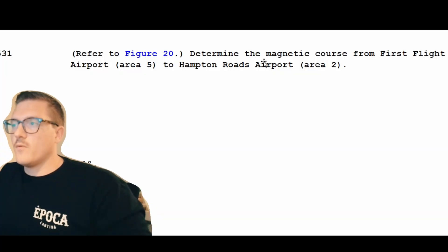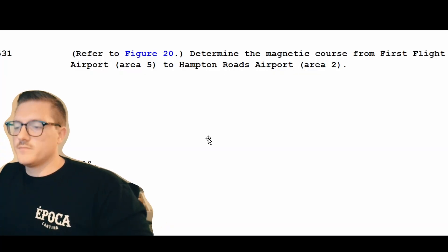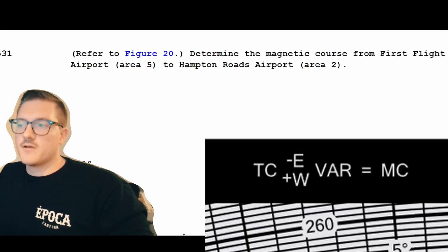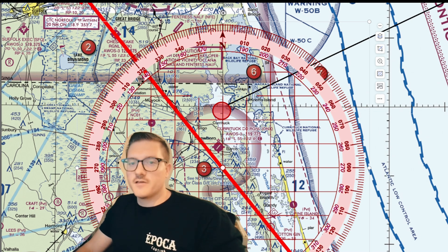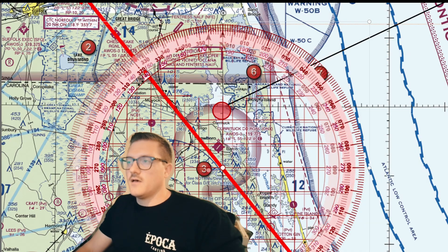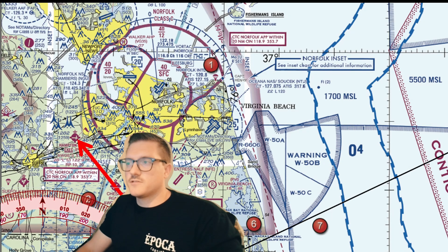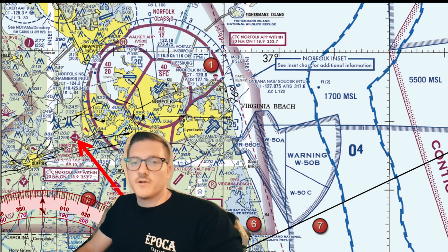Referring back to the question, they wanted us to determine our magnetic course. To convert our course to magnetic course, we have to add or subtract the magnetic variation. When calculating for magnetic variation, we look for these dashed magenta lines — that's going to be your isogonic line, which tells you what the magnetic variation is in this spot. In this case, the isogonic line nearest our route is 11 west. Whenever it's west, you add; whenever it's east, you subtract.